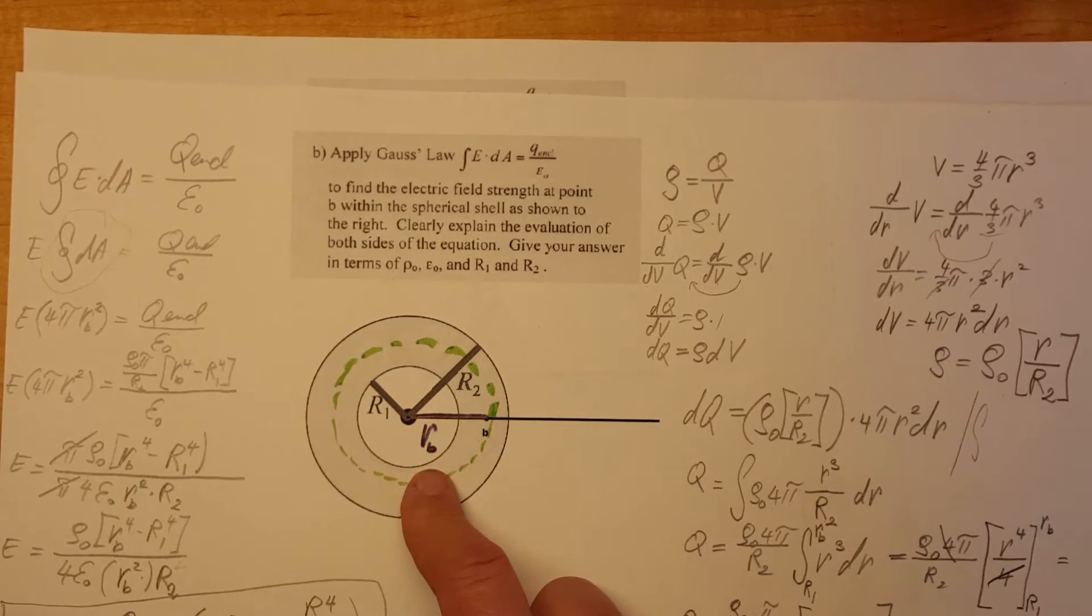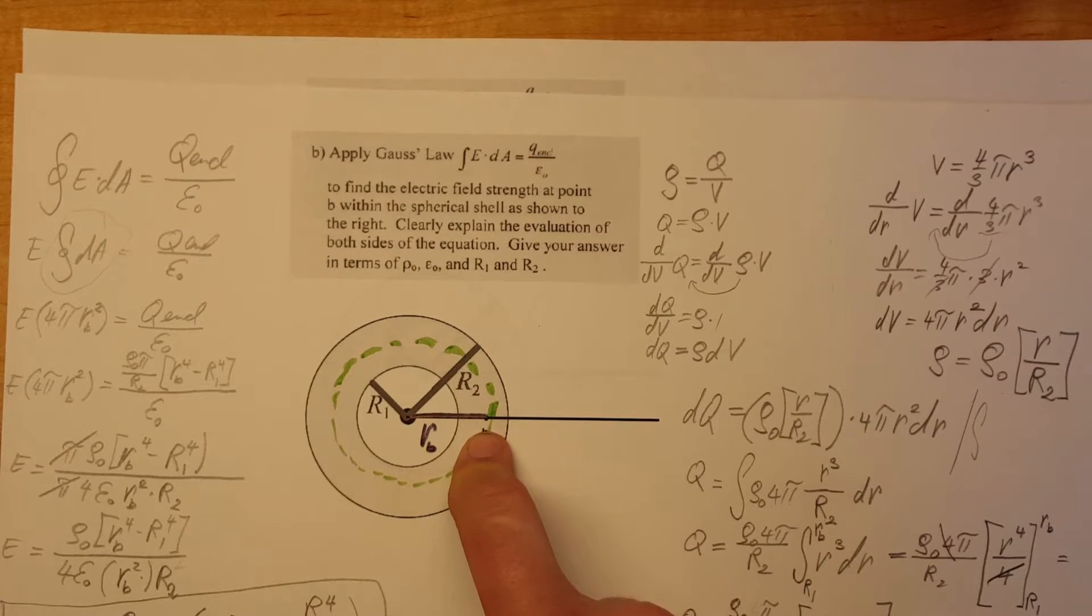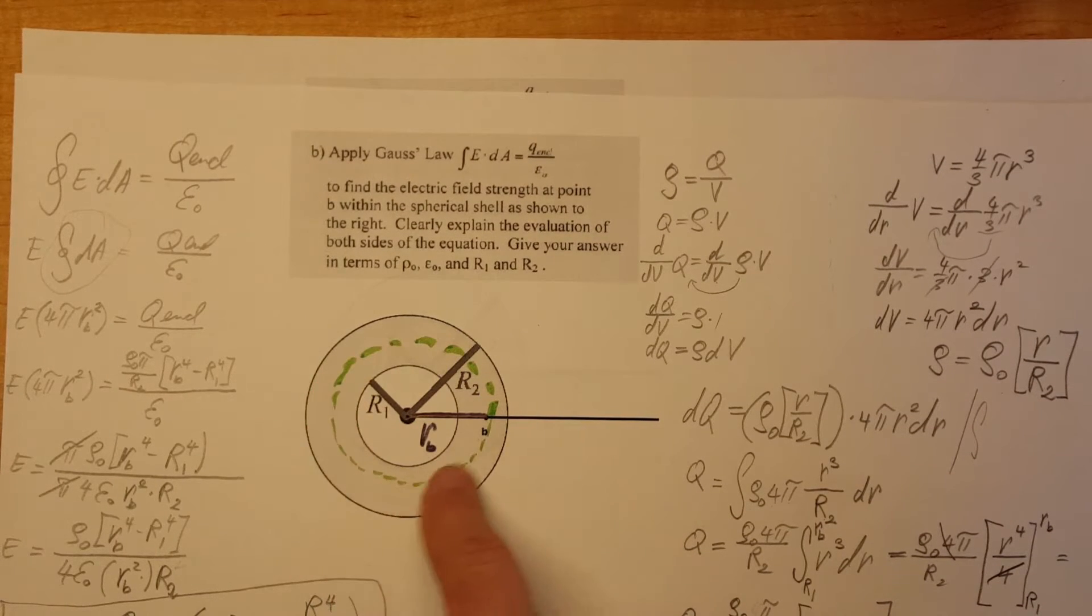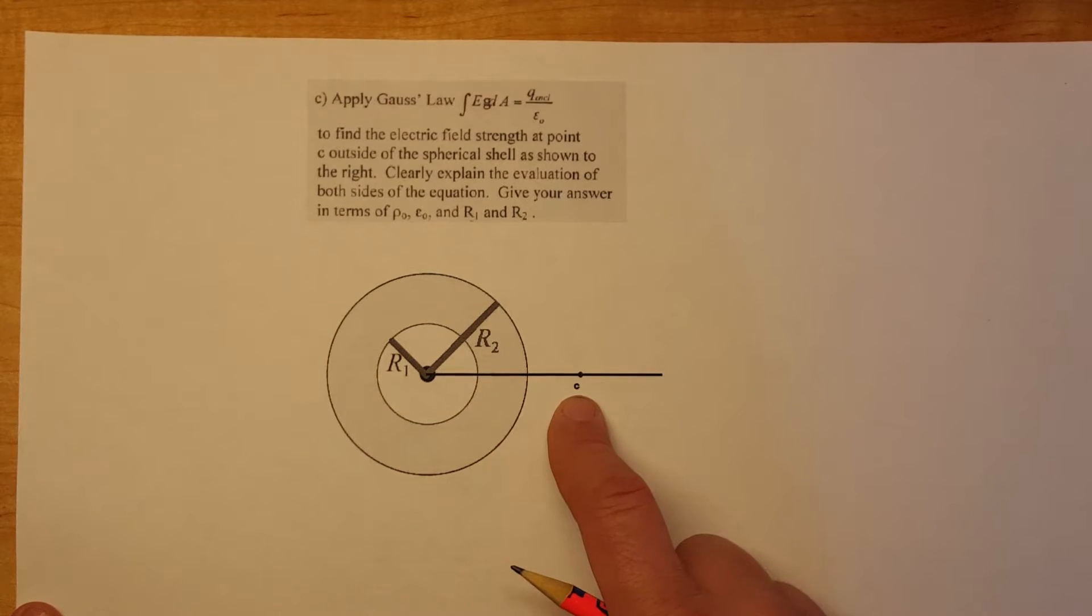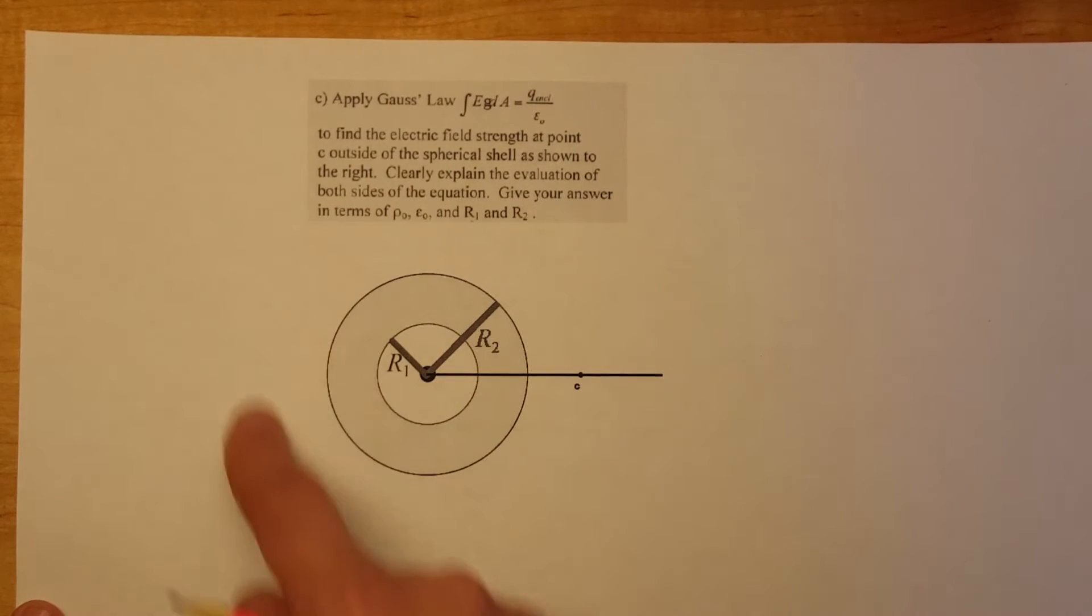The second video we moved to point B and we found the electric field inside the non-conducting material. And now we're going to move all the way to point C which will be outside of it.